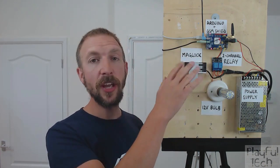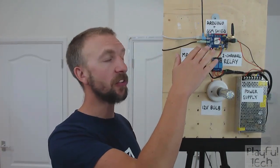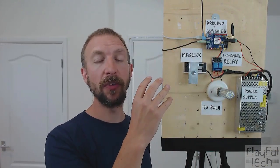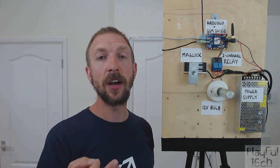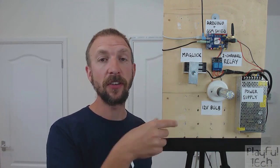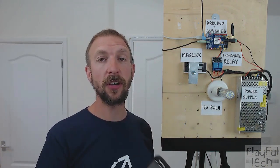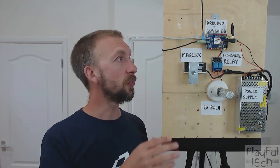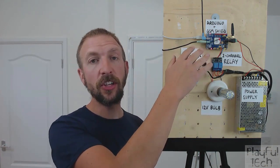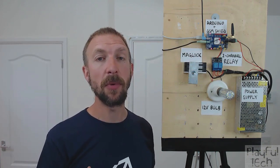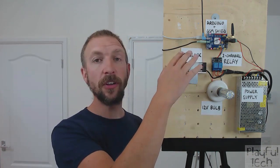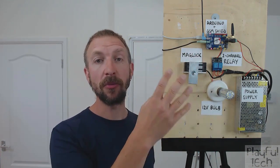On the board here I've got an Arduino Uno at the top that's got a GSM shield stacked on top of it, and that shield has got a SIM card loaded into the back of it. It's a regular SIM card like you'd put in a mobile phone, and we're going to use this shield to emulate much of the behavior of a mobile phone, but scripted through an Arduino sketch.